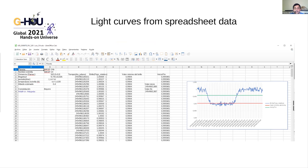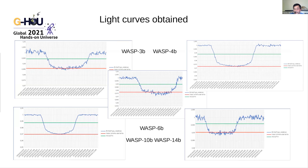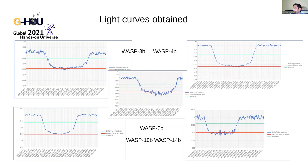Here we can see the five stars we measured and their five light curves. Some are very clean, like WASP-4b or WASP-10b, while others are noisier. In WASP-4b we can clearly see the period when the planet is passing across the star, indicating the planet is very large relative to the star. The decrease in brightness is very gradual, and the percentage decrease is over one percent — very large.